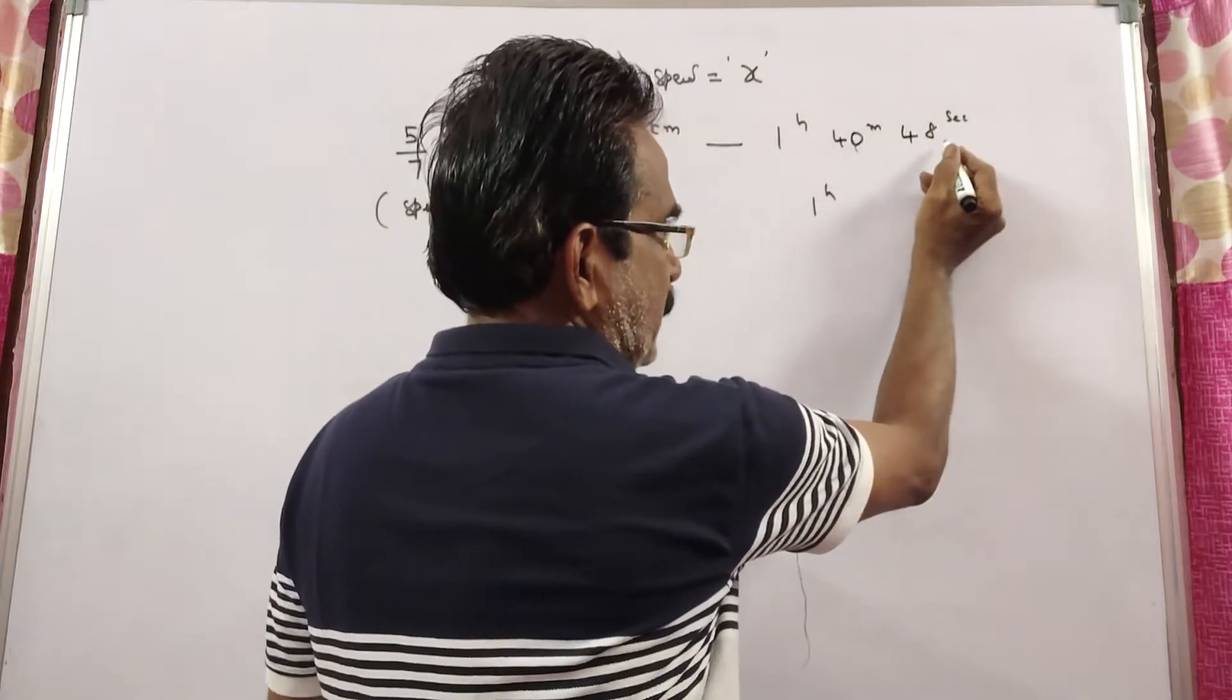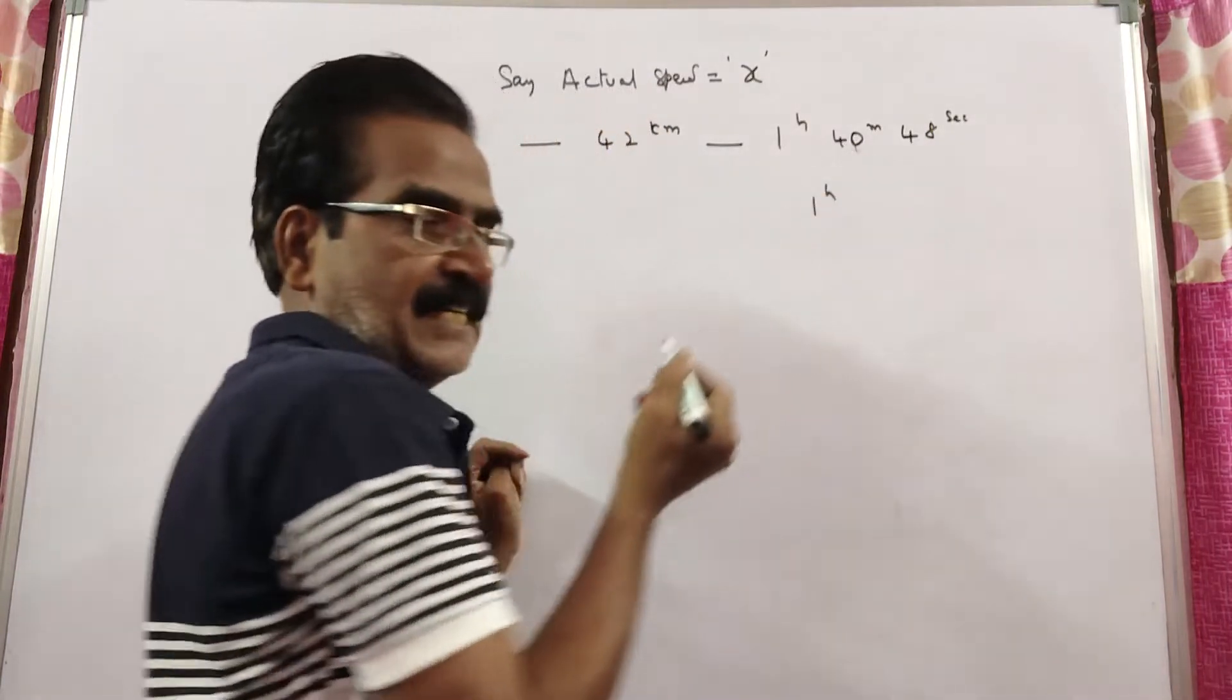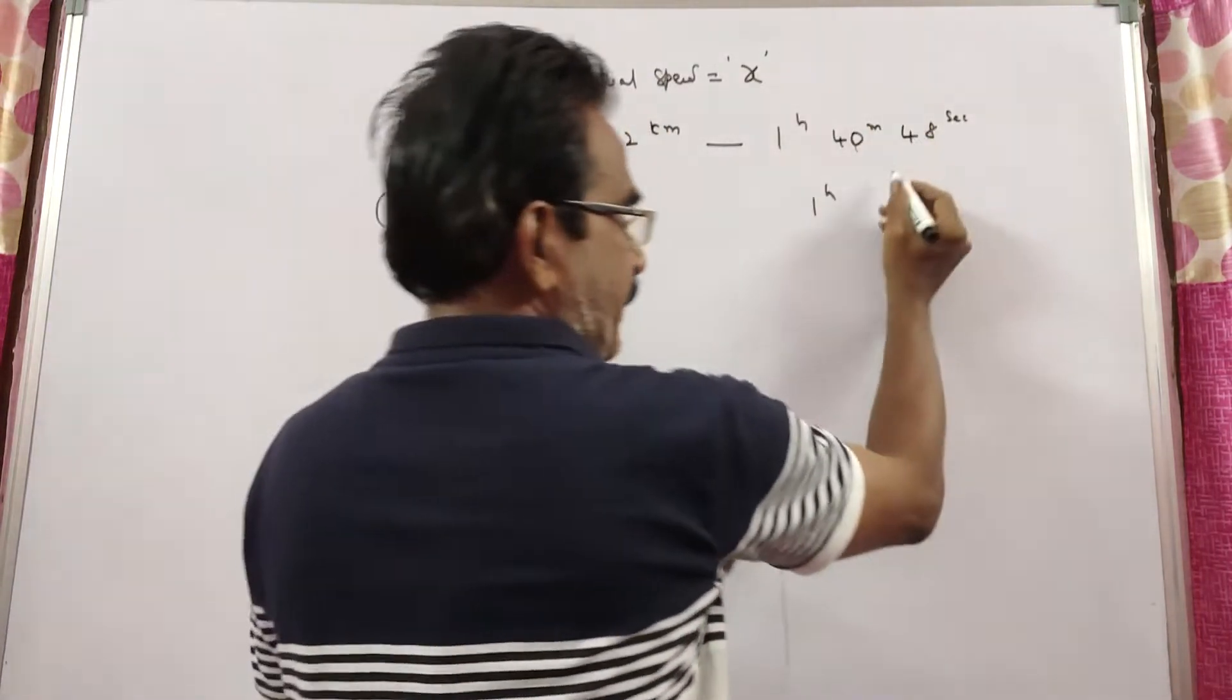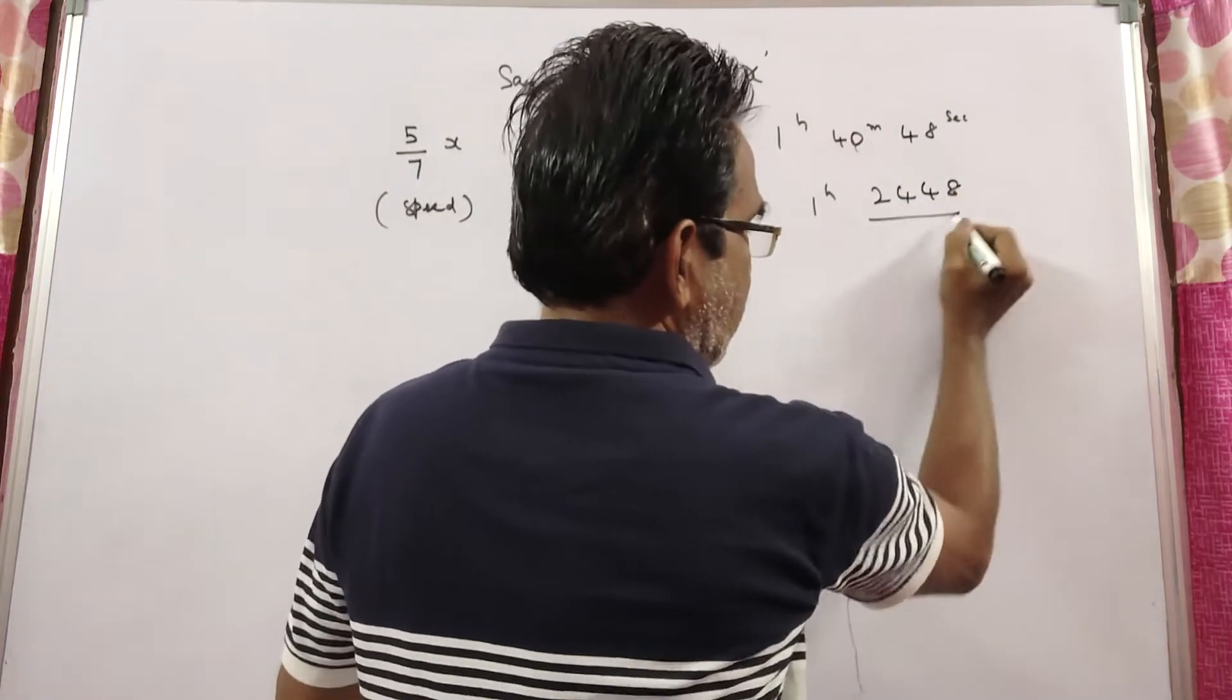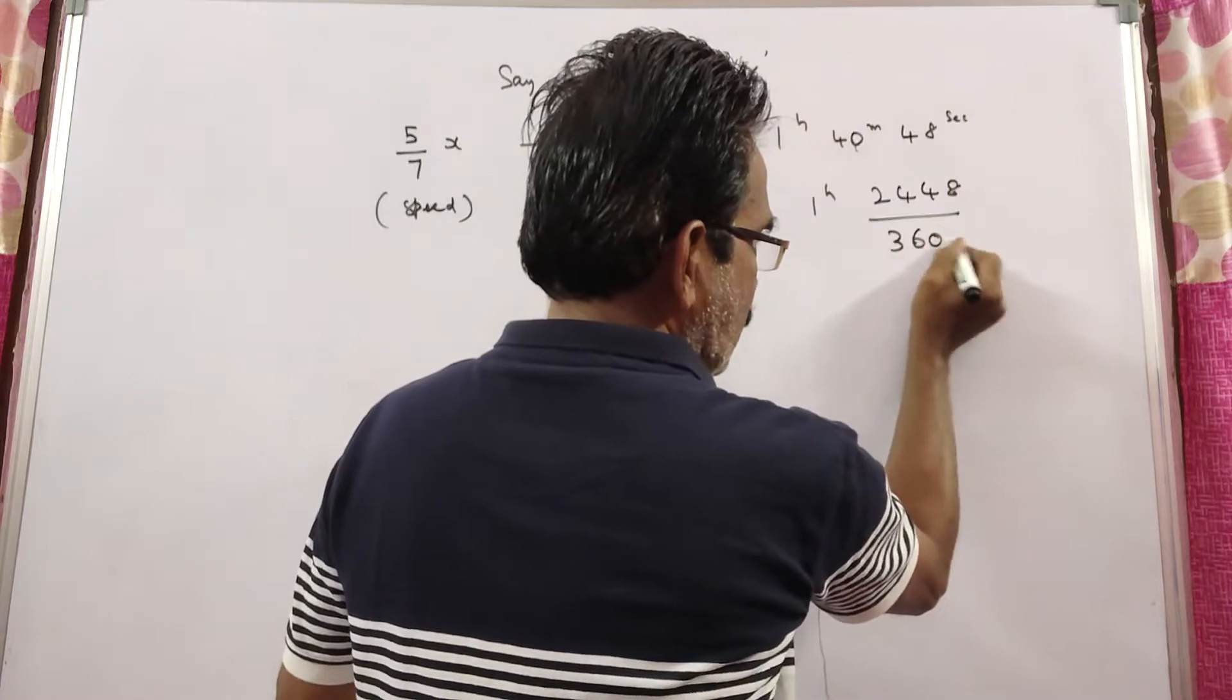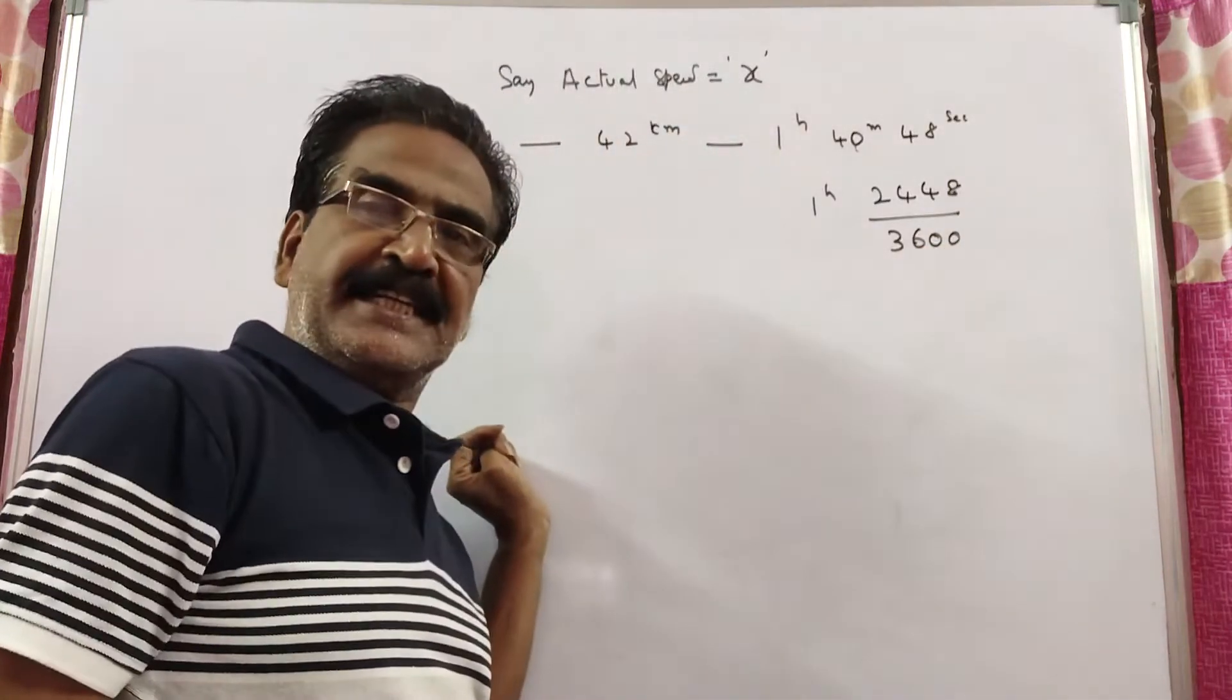40 minutes and 48 seconds: 40 minutes is 2,400 seconds, plus 48 equals 2,448 seconds. Divide by 3,600 to convert into hours.